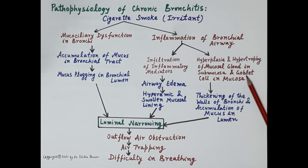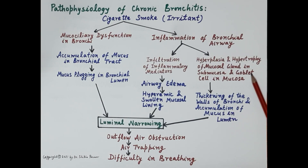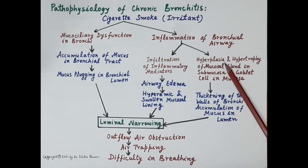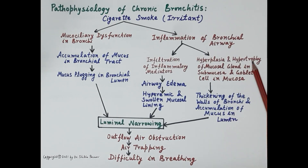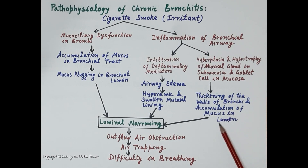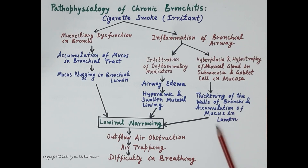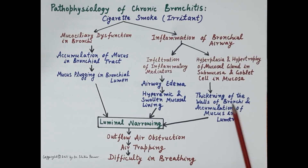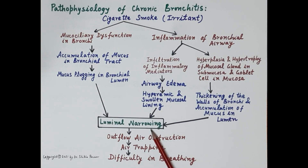Apart from this, chronic inflammation results in hyperplasia and hypertrophy of the mucosal glands in the submucosa and the goblet cells in the mucosa. Hyperplasia refers to an increase in the number of cells; hypertrophy means an increase in the size of cells. This results in thickening of the wall of the bronchi and also an increase in mucus secretion, leading to accumulation of mucus in the lumen and narrowing of the lumen.